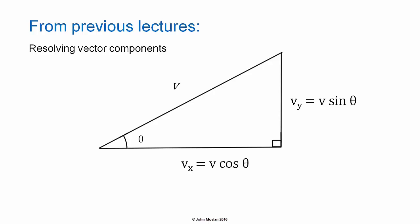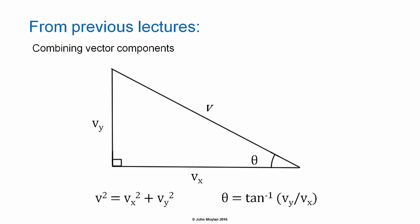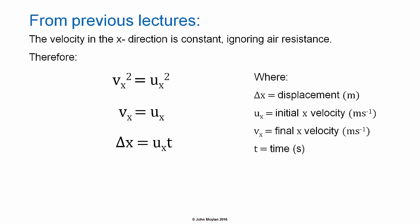Components of a vector V, at some angle theta to the horizontal, can be resolved using trigonometry. X and Y vector components can be combined to produce a resultant vector, using Pythagoras to calculate the magnitude of the vector, and trigonometry to calculate the direction of the vector.